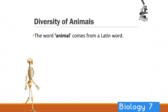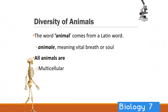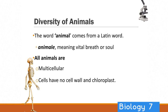The word animal comes from the Latin word 'animale', meaning vital breath or soul. All animals have a few characteristics in common: they are multicellular, their cells do not have a cell wall and chloroplasts — those are characteristics of plants — and they are also heterotrophic. This links in with the lack of chloroplasts; they can't make their own food. If they were autotrophic, that would be a plant, and autotrophic means they are a primary producer. So all animals are heterotrophic.